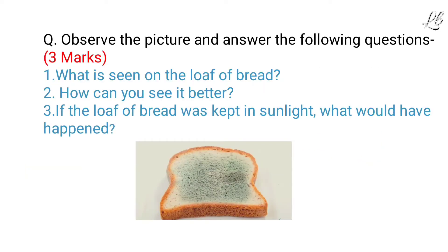Observe the picture and answer the following questions. This can be given for three marks. What is seen on the loaf of bread? In class, you have taught about fungus or black bread mold, so this answer is simple — it is black bread mold or fungus — but the child has to observe the picture carefully. How can you see it better? The child can say: with the help of a magnifying glass or a microscope. If the loaf of bread was kept in sunlight, what would have happened? Fungus develops in the presence of moisture. Since the bread is in sunlight, there will be no moisture, so the bread may become dry, there will probably be no fungus, and the texture of the bread can become hard.